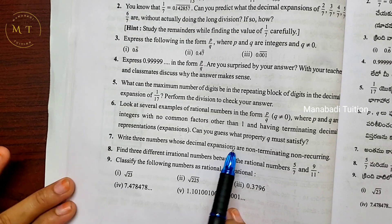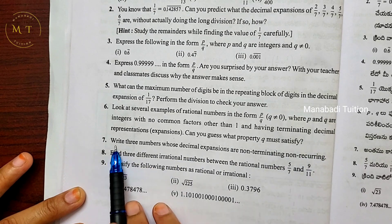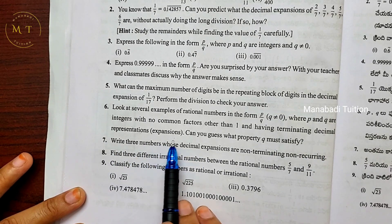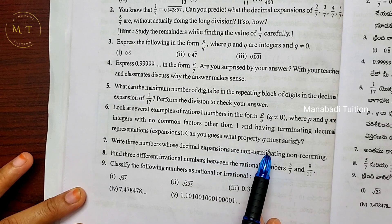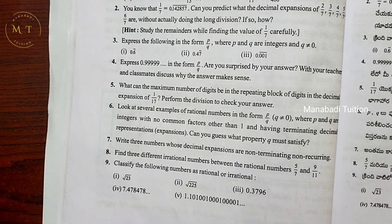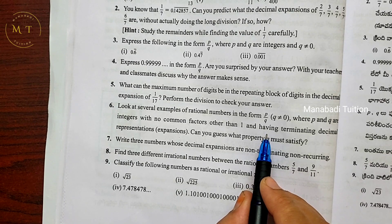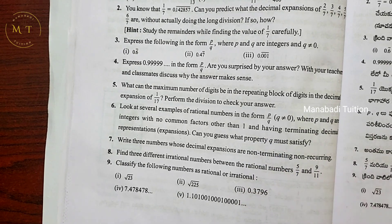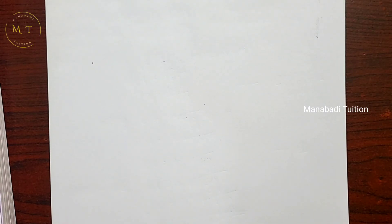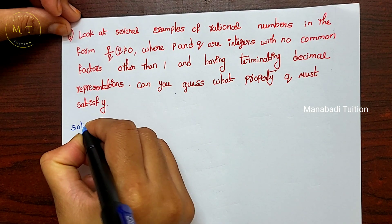These numbers must have terminating decimal representations. Can you guess what property q must satisfy? So the denominator q must satisfy a certain property. The common factor must be 1, and based on that we will find the solution.